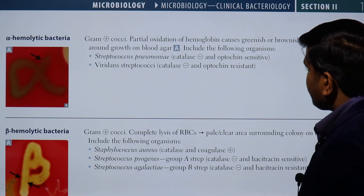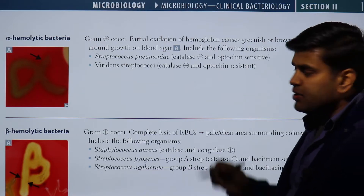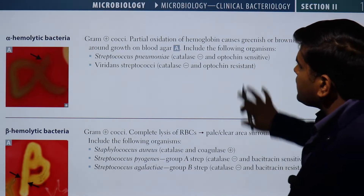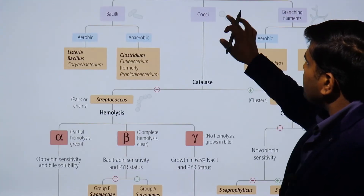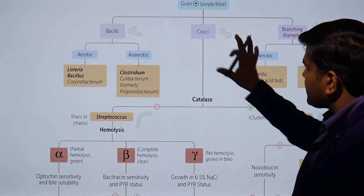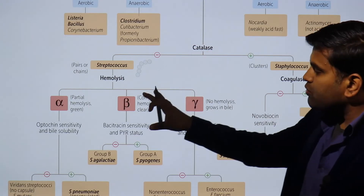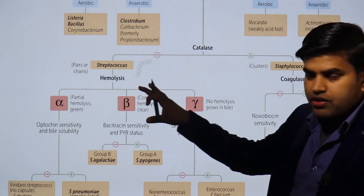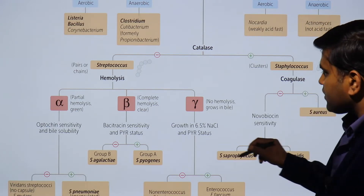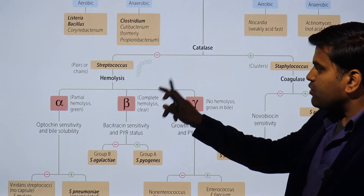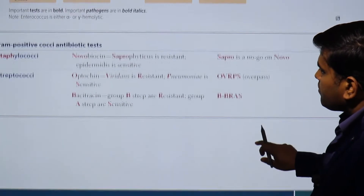We are on page 135 of USMLE Step 1 2021. We have previously classified bacteria as gram-positive cocci and divided them by the catalase test into two groups: staphylococcus and streptococcus. In staphylococcus we covered S. aureus, epidermidis, and saprophyticus. In streptococcus we are talking about alpha hemolytic, beta hemolytic, and gamma hemolytic organisms.